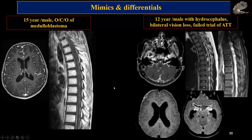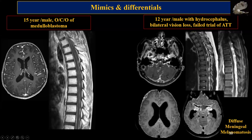Look at the spine imaging — even spinal meningeal involvement can be seen. This particular patient was on ATT for two years with failed treatment. It is very important to look at the T1-weighted image here: the meningeal disease is T1 hyperintense. If you have a T1 hyperintense process involving the spinal canal, do consider diffuse meningeal melanomatosis. This case was indeed diffuse meningeal melanomatosis, and treating it as ATT was a mistake because of the leptomeningeal enhancement.